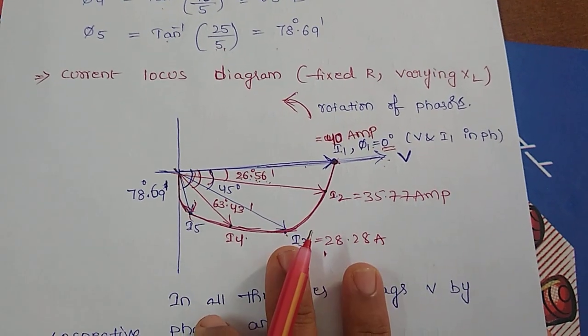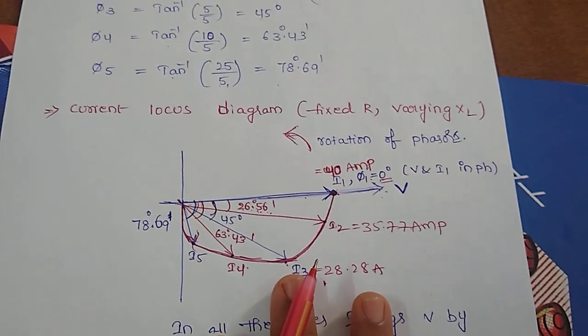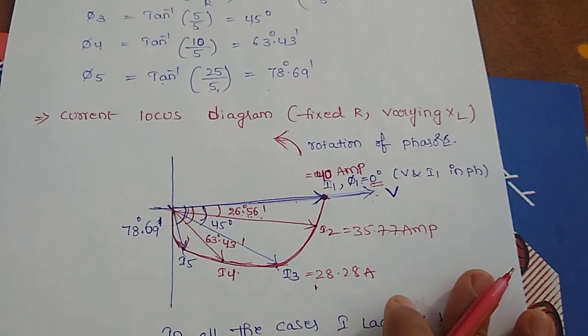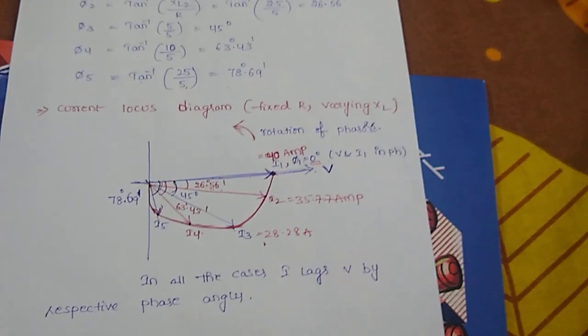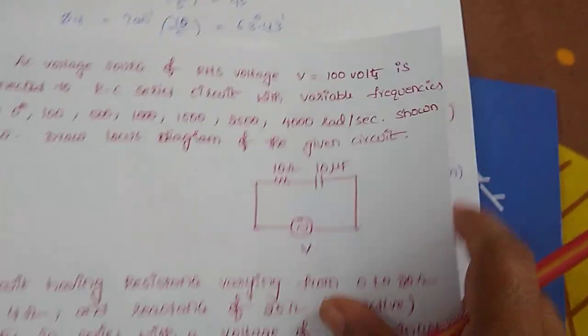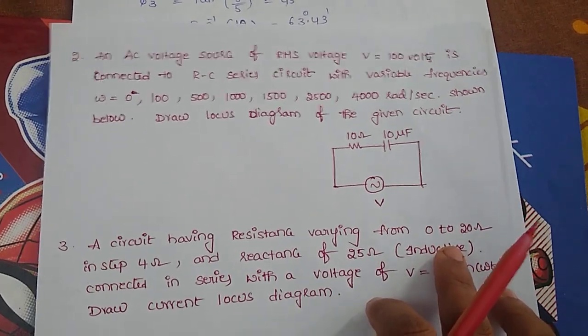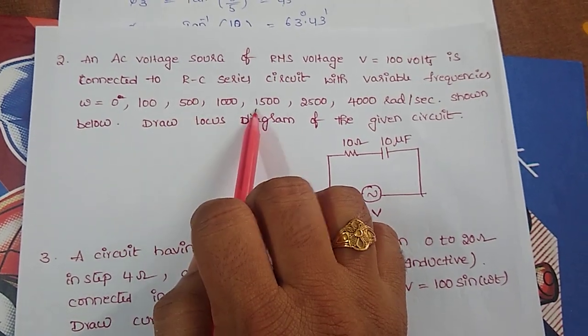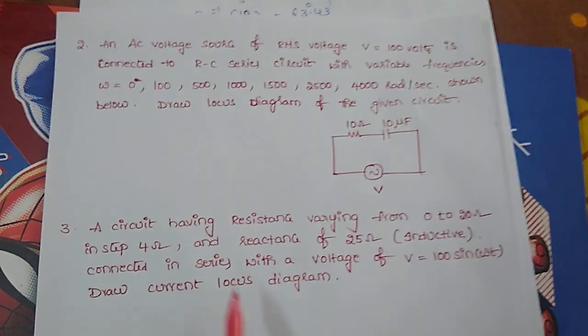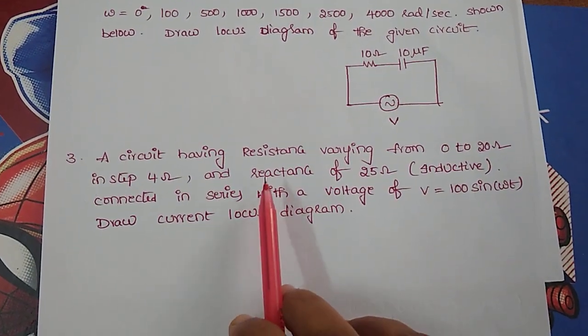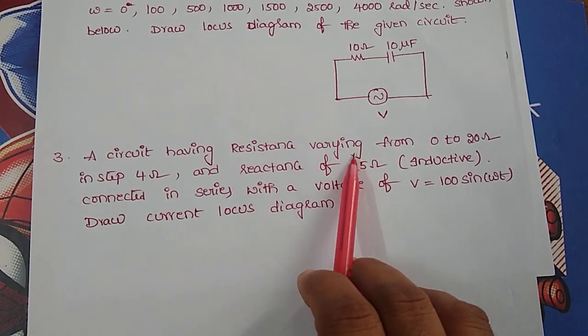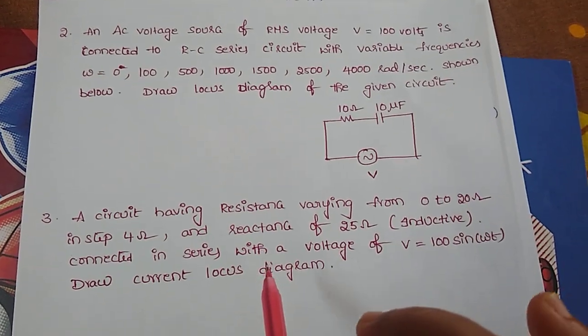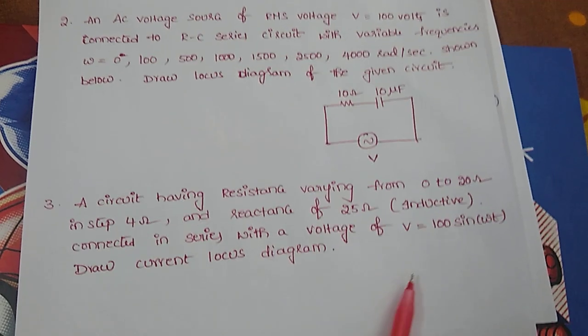In this way we can solve any problem to draw the locus diagram of any given circuit based on their circuit parameters like R, L, and C. Similarly we can solve these problems also. Here in this case it is an RC circuit for different values where XC is varying and R is fixed. And here in this circuit it is an RL circuit where R value is changing and XL value is going to be fixed. For these two cases we can draw current locus diagrams similar to the previous case. Thank you.